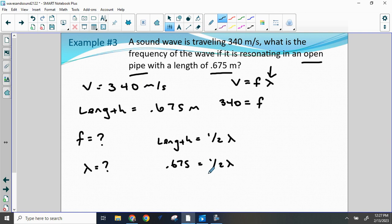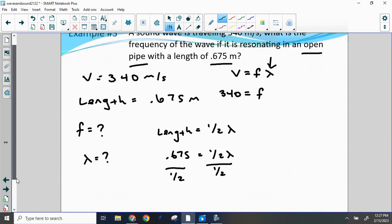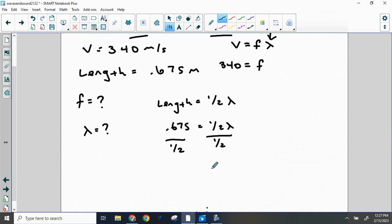So to solve for wavelength, we're going to divide both sides by one-half, which is really the same as multiplying by two. And what we're going to find is that the wavelength is equal to 0.675 divided by one-half. And that means that the wavelength is not 0.675, but 1.35 meters.